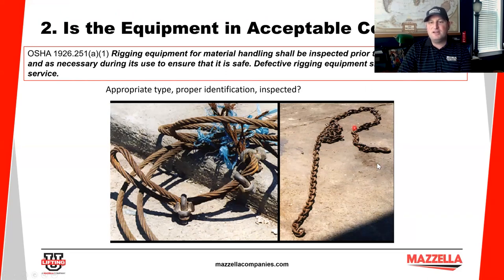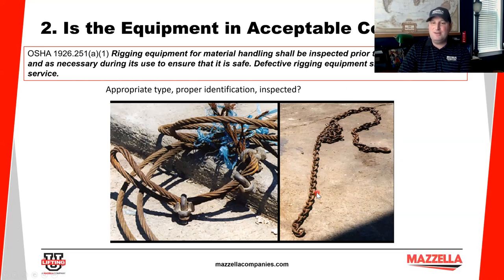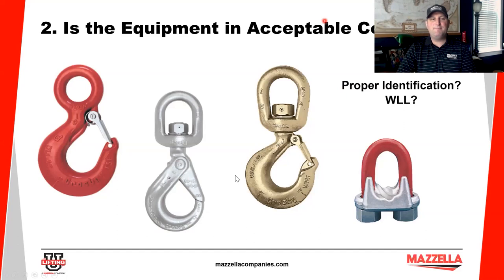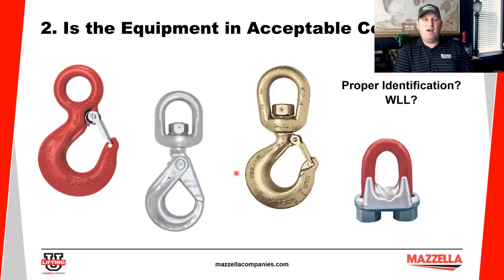Here to the right we've got a chain sling with a grab hook at one end and no tag, so we cannot use that to make a pick. At the other end there's no hook. Appropriate type and proper identification? Definitely not. It needs to be inspected prior to the pick.